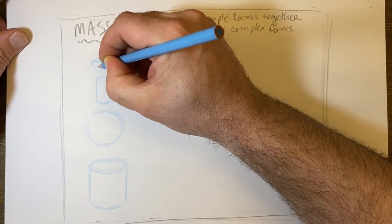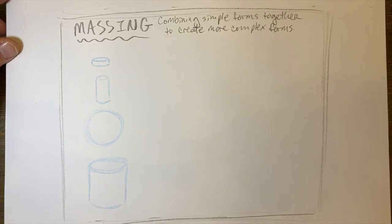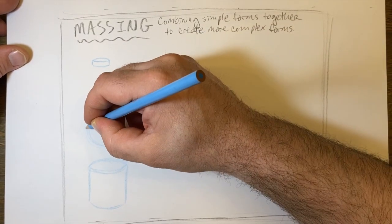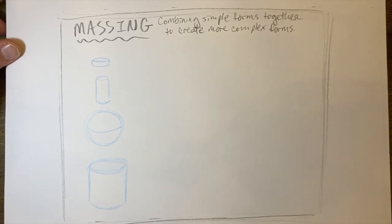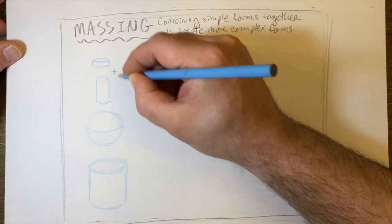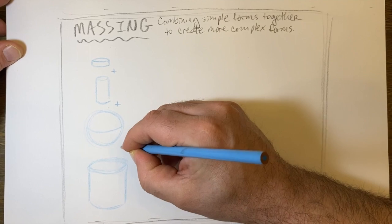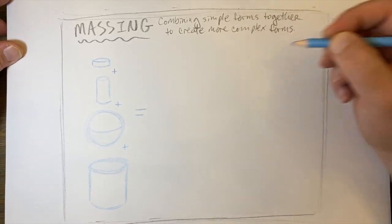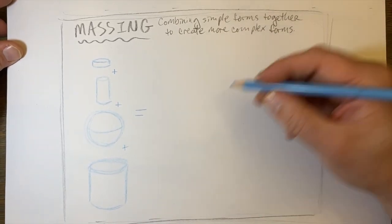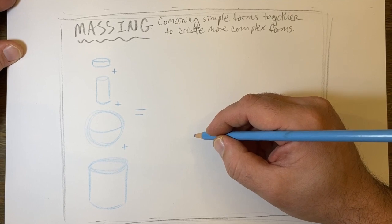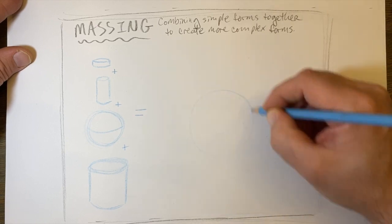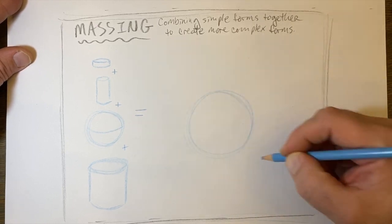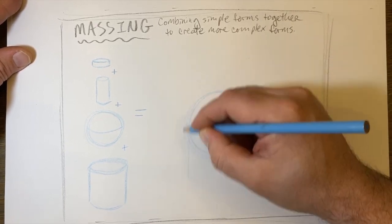Now once I'm happy with that, I can say that this plus this plus the sphere plus that larger cylinder will equal my complex form. Notice that I'm using my blue colored pencil, so that's more just for a visual aid for you students to see the basic lines before I go back over it with the darker pencils.